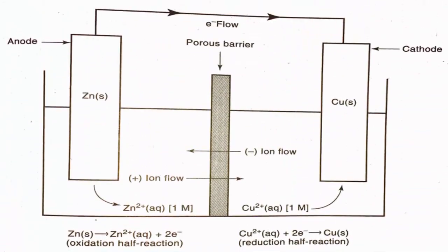Looking at this picture, instead of a salt bridge we have a porous barrier. A porous barrier has microscopic pores — tiny holes — which allow the flow of negative and positive ions between the two half reactions.